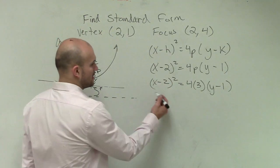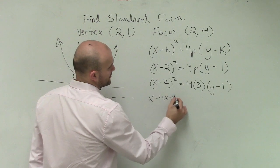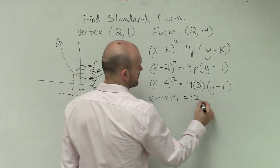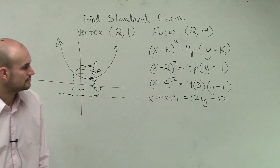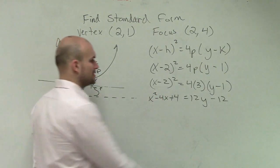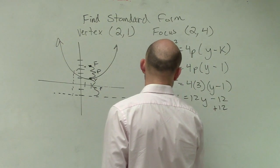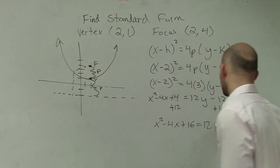Yeah. So now you could just do x² - 4x + 4 = 12y - 12. Then what you could do is you could add the 12 to the other side. So you have x² - 4x + 16 = 12y.